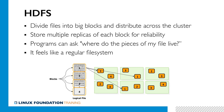Just like any file system, HDFS stores data in files, and files are grouped together into a tree of subdirectories. The similarities with a regular file system continue in that HDFS splits all the data stored in files into a series of chunks called blocks. But unlike a regular file system, HDFS likes its blocks really big.